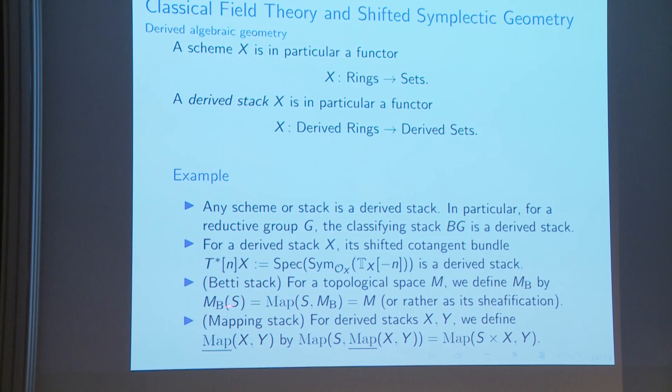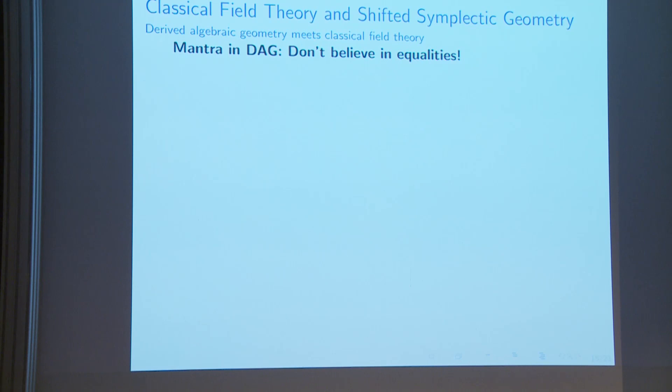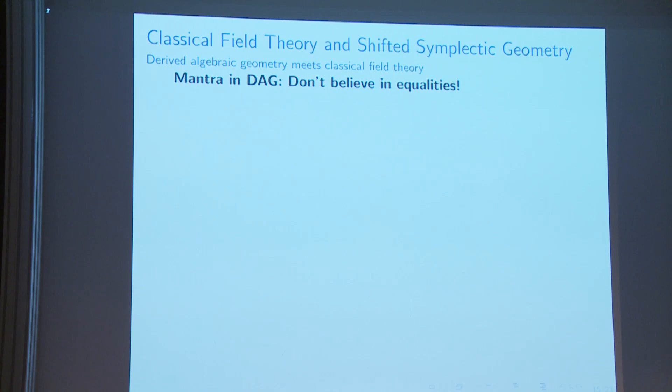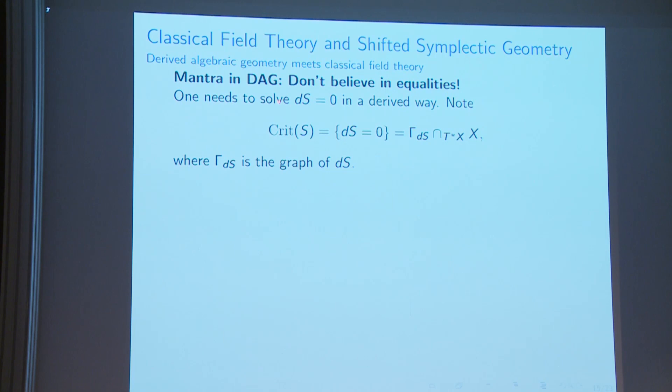The mapping stack is defined analogously to the classical definition. In derived geometry, you cannot use equalities in the usual way. In classical field theory, the equation dS=0 can be read as an intersection — the fiber product of the graph of dS and the zero section inside the cotangent bundle. In the derived world you use the derived tensor product, which keeps track of the homotopy information of how exactly dS is zero.